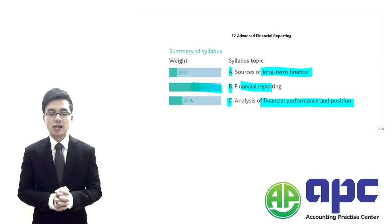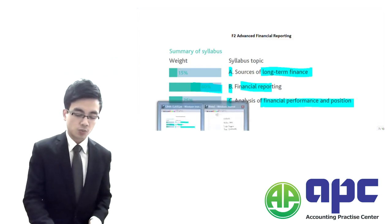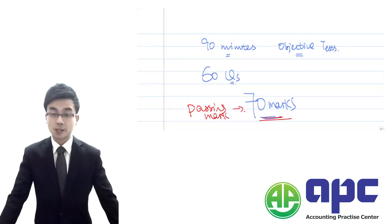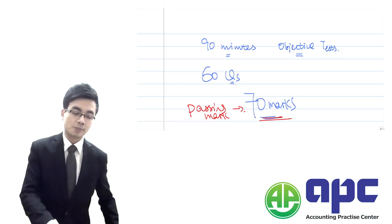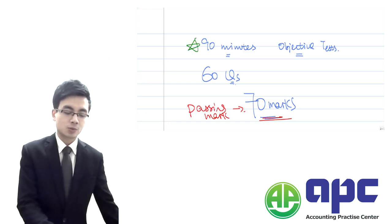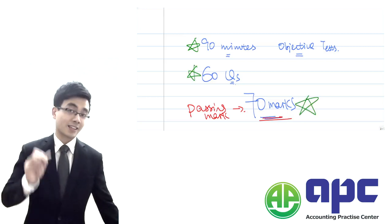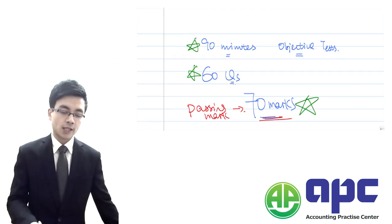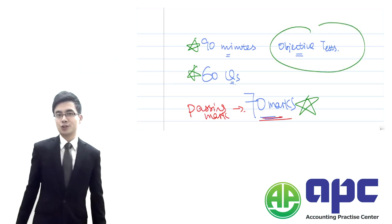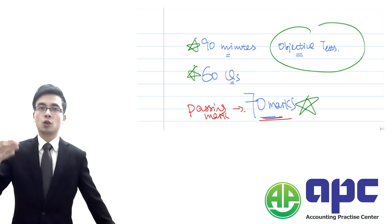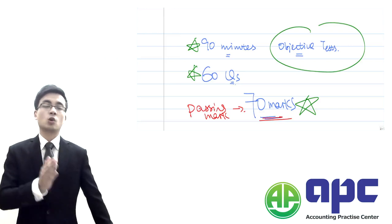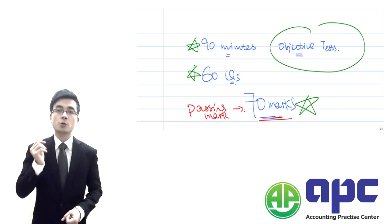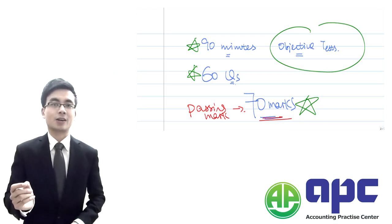That's the first part of this video — the syllabus. Part two is where we're going to talk about the assessment for the CIMA F2. You're given 90 minutes to deal with the CIMA F2 exam, which has 60 questions, and the passing mark is 70 rather than 50. All questions are assessed by computer only. They are objective test questions, including multiple choice questions, drop-down box questions, yes or no type questions, number entry questions, and so on.